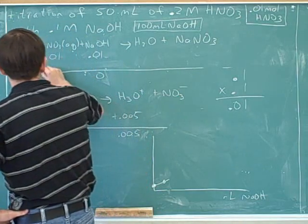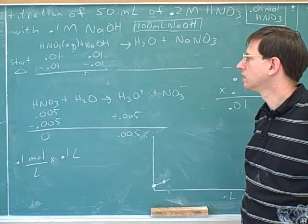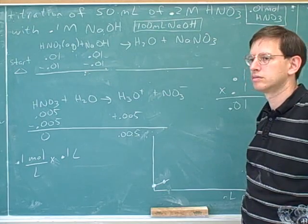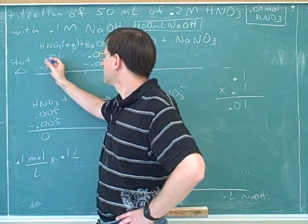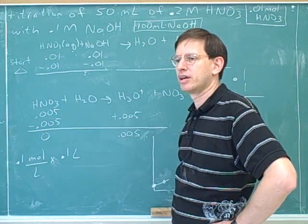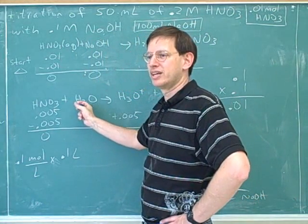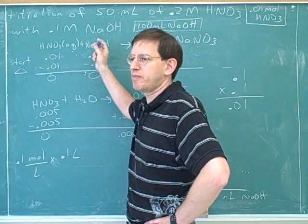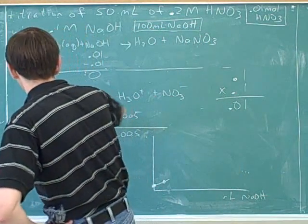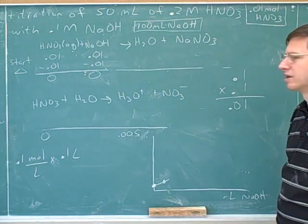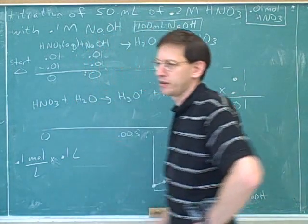So all of the 0.01 would be used up for both — in a sense they're both the limiting reagents. We get 0.01 nitric acid reacting with 0.01 NaOH. How much nitric acid did we start with? 0.01 moles. How much are we using up? All of it. And how much sodium hydroxide is left? Zero. So we don't go on to the next step — there's no acid left over, it's all reacted with the sodium hydroxide.